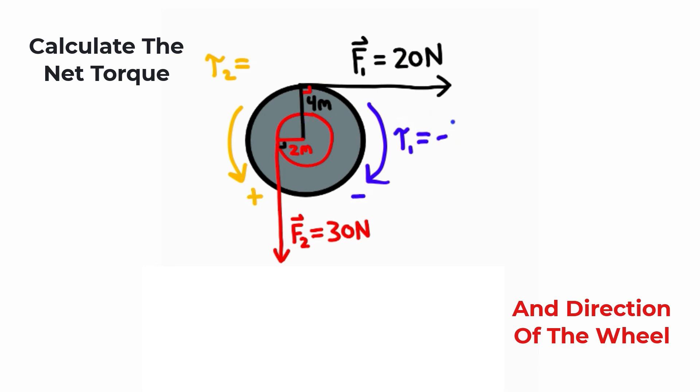So for torque one, we have a negative torque, and our force is 20 newtons, and our distance from the lever arm is 4 meters. So negative 20 times 4 will give you negative 80 newton meters.